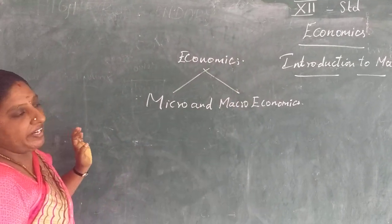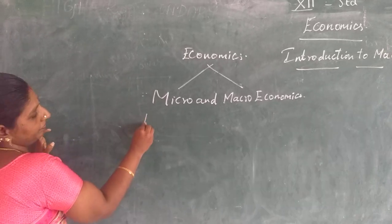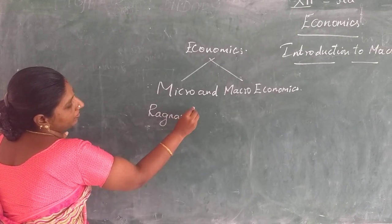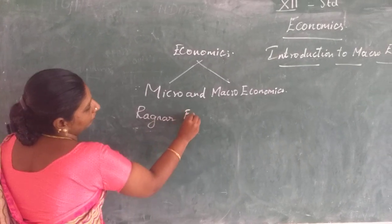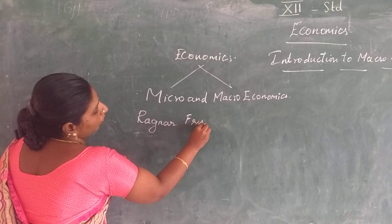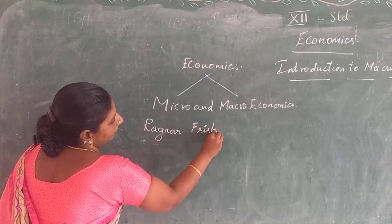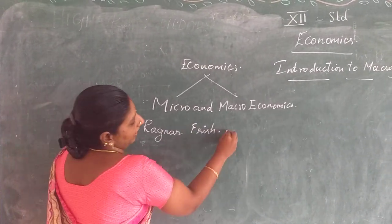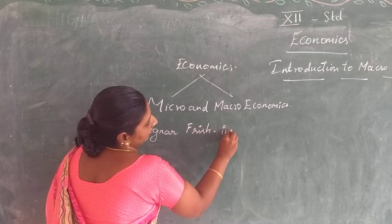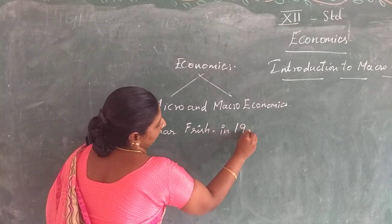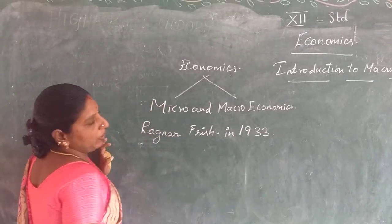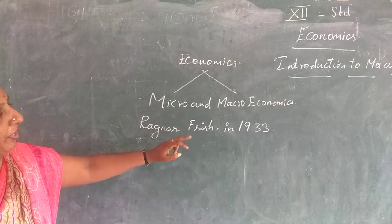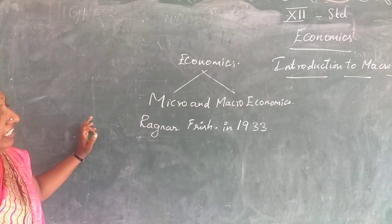Ragnar Frisch, a Norwegian economist, coined the words micro and macroeconomics in 1933. He was the first one who propounded the terms micro and macroeconomics in 1933.